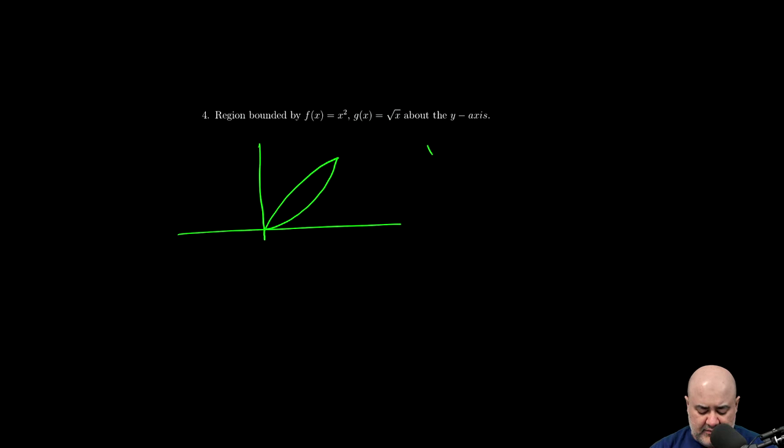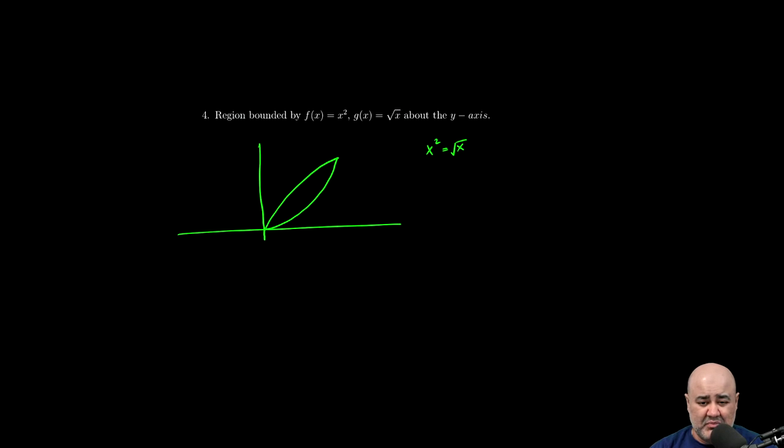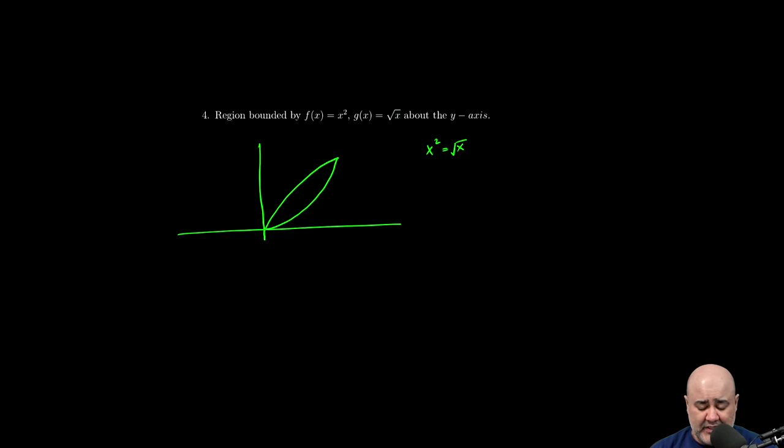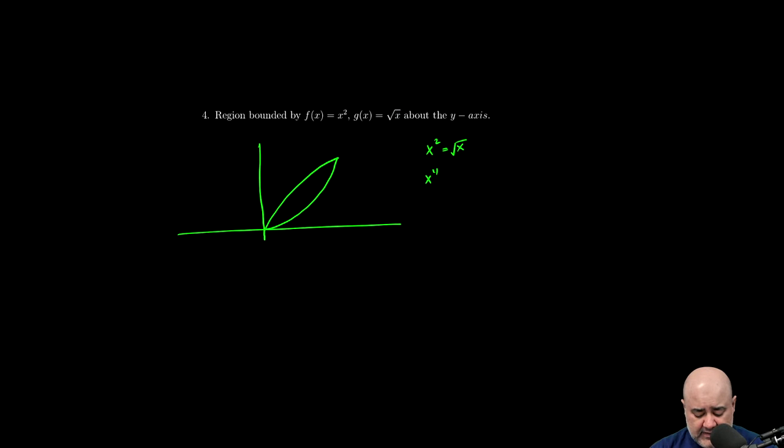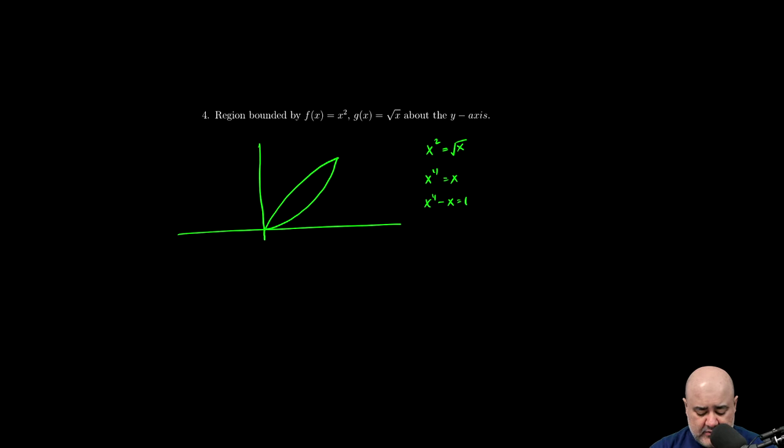And just thinking about this, if x squared is equal to root x, plugging in numbers actually works here faster than solving it. You can square both sides and get x to the fourth equals x, x to the fourth minus x equals zero. Factor out an x, and you get x cubed minus one equals zero. So either x is equal to zero or x cubed equals one, which means x is equal to one.